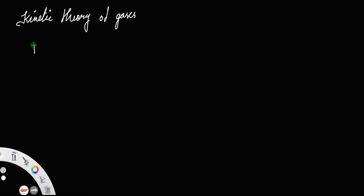According to kinetic theory of gases, the pressure exerted by the molecules of a gas is equal to 1/3 times rho v-squared, where rho is the density of the gas molecule and v is the mean square velocity.